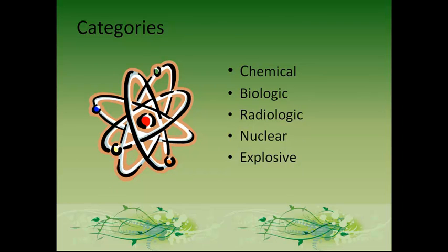Some categories of hazards include chemicals — vesicant, nerve, blood, or respiratory. An example is anthrax spores that are inhaled. Biological hazards include bacteria, viruses, and toxins like influenza and tuberculosis. There are also radiological hazards, like radon gas, which is an odorless, invisible byproduct of the decay of uranium that enters buildings through cracks and gaps and is deadly.